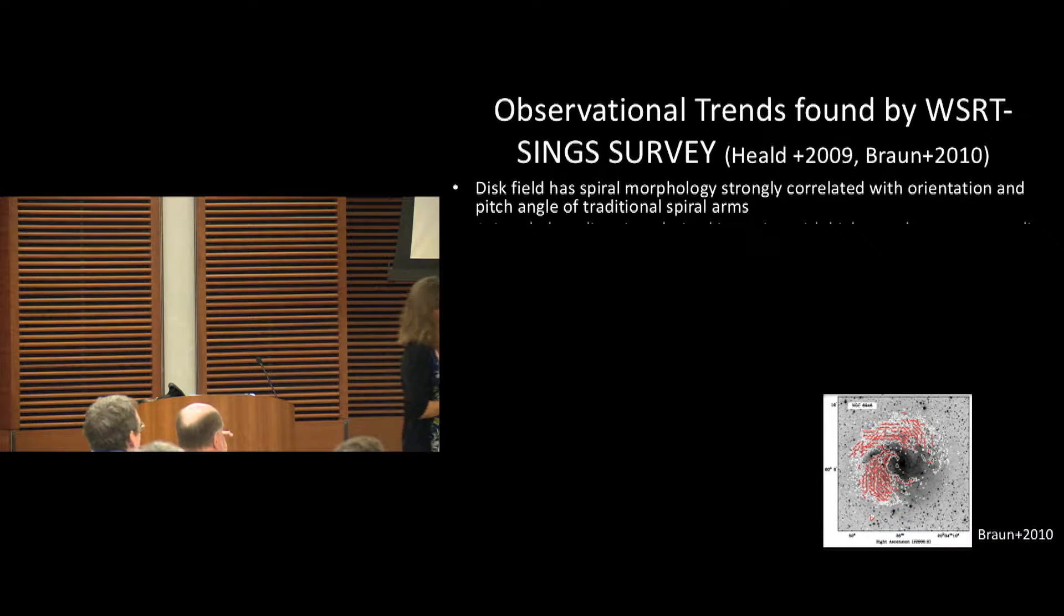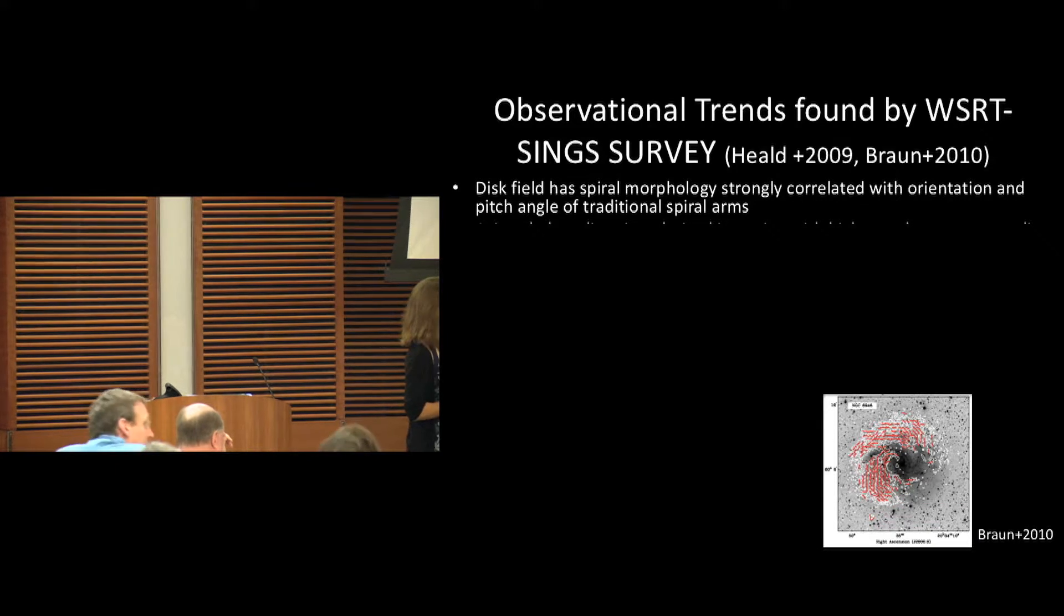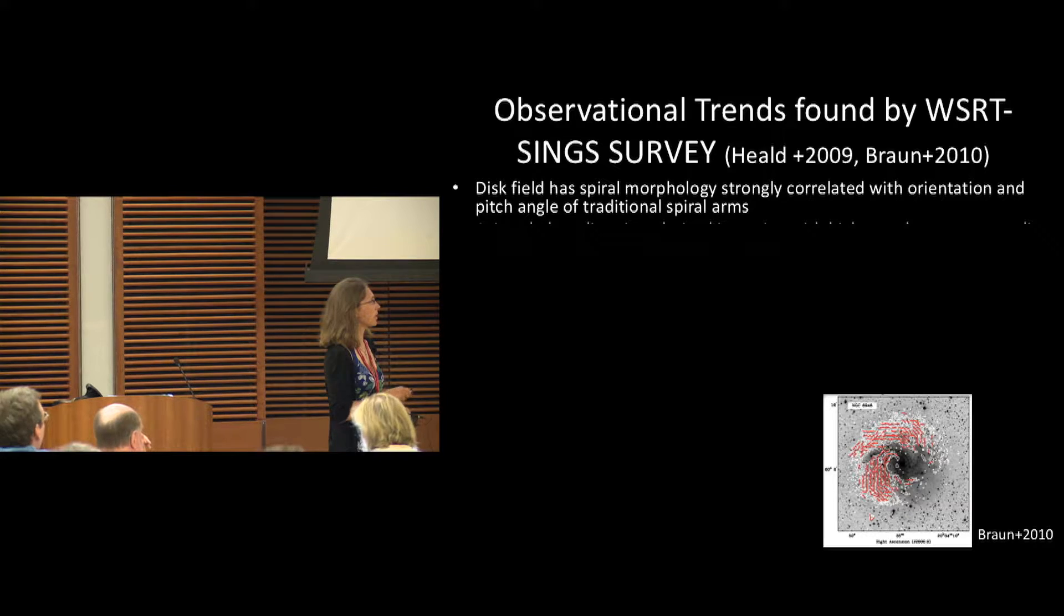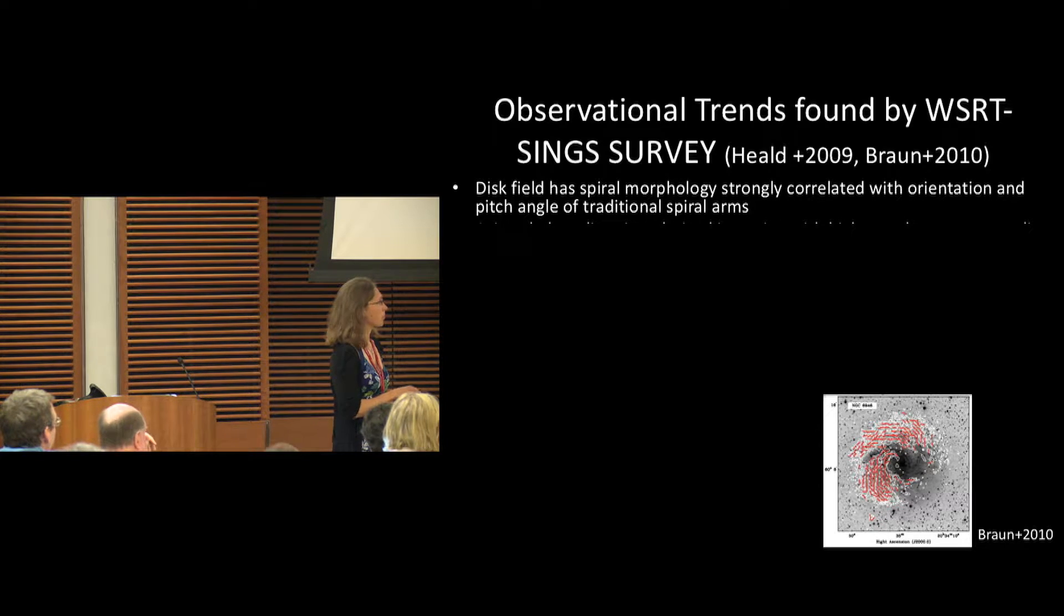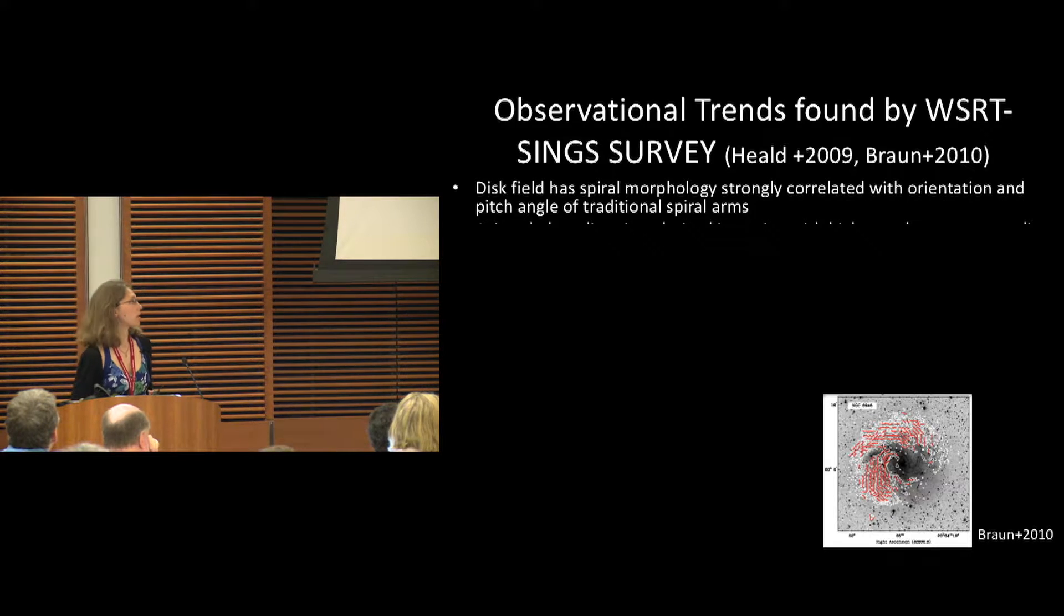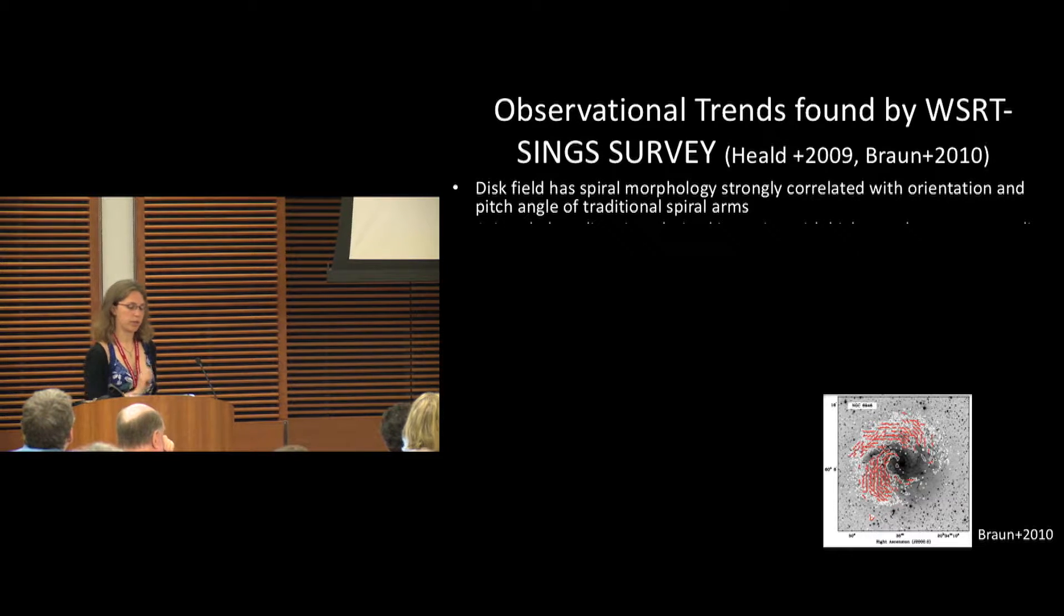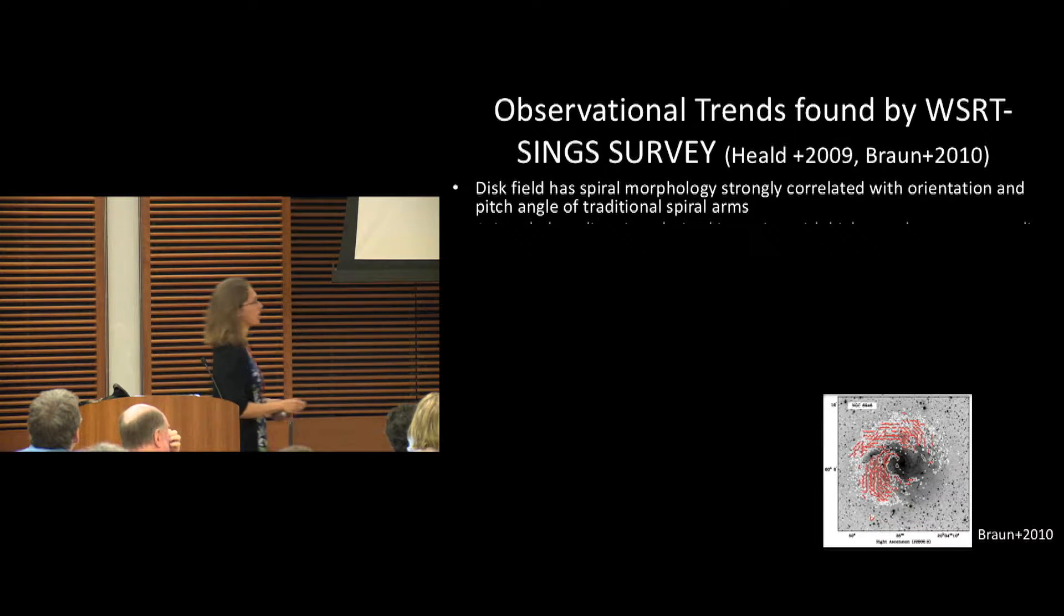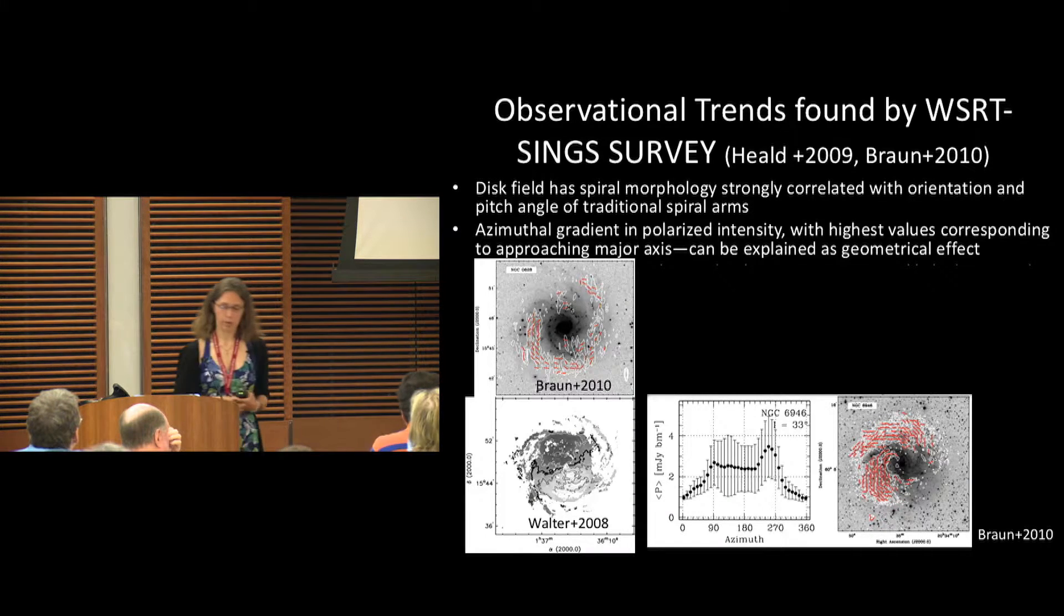Here you can see in the grayscale is optical emission of spiral galaxy NGC 6946, and these contours and vectors are showing the direction of the magnetic field in the plane of sky. You can see that the polarization is in between the optical spiral arms.